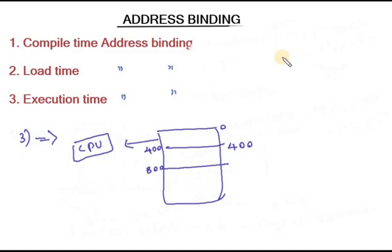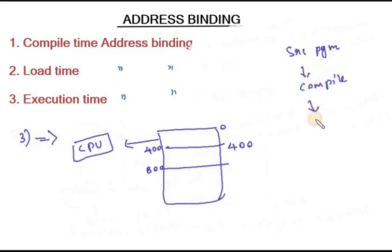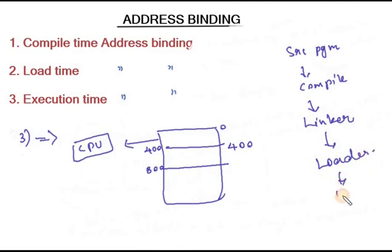One more important thing: we have a source program like a dot-C file. After compiling and linking with shared library files, it will be loaded into the loader and finally get executed. Next, we have to discuss topics like dynamic loading, which we will be discussing in the next lectures. Thank you.